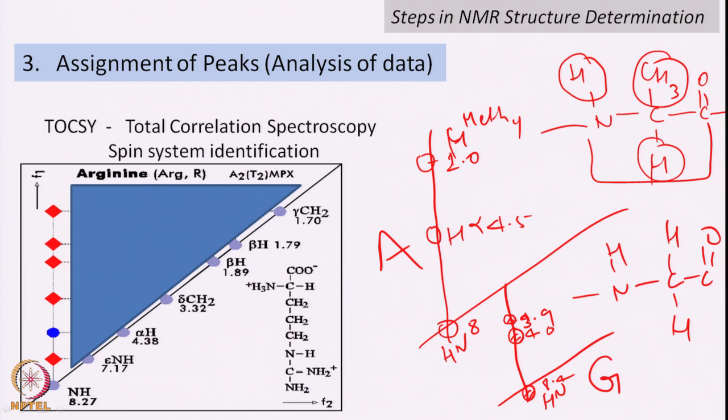Once individual spin systems are identified, we need to find the correlation with the next amino acid. I found tryptophan, arginine, alanine, serine, glycine — but which alanine: number 5 or number 12? Which glycine: number 7 or number 11?